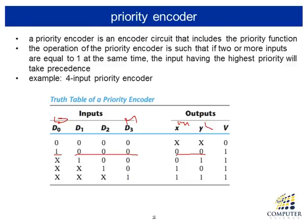If d0 is zero or one and d1 is one while d2 and d3 are zero, then the most significant position with a one is d1, so the output produces binary one. If d2 is one while d3 is zero and d0 and d1 are any combination of zeros and ones, then the most significant position with a one is d2, so the output produces binary 10, corresponding to decimal two.